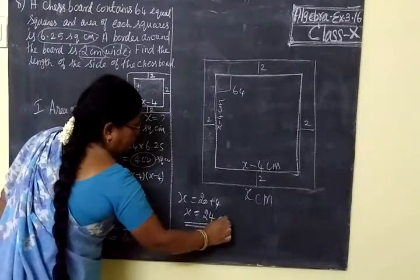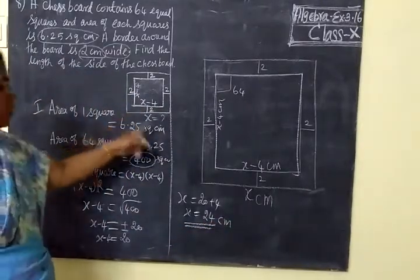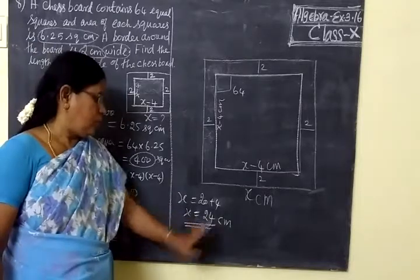So the side of the chessboard, outer side, is equal to x equals 24 centimeters.